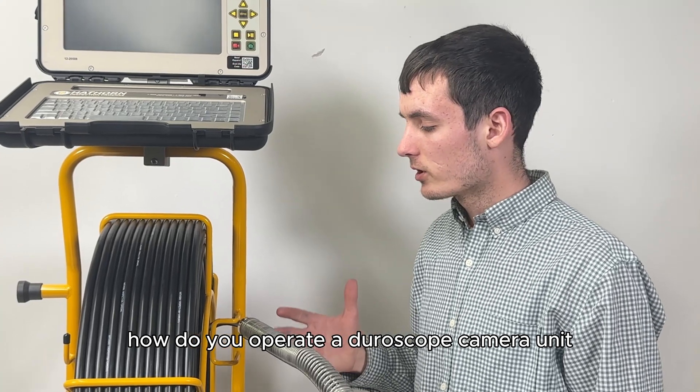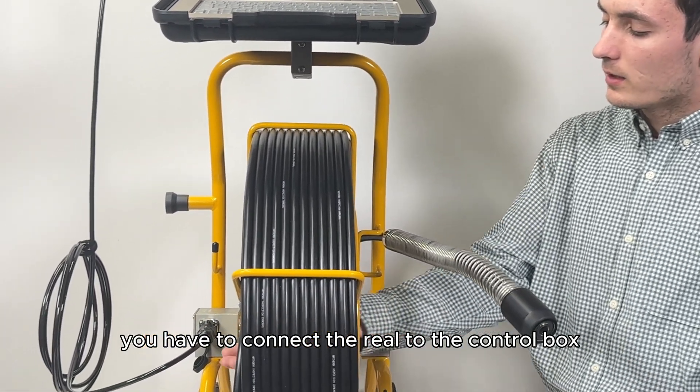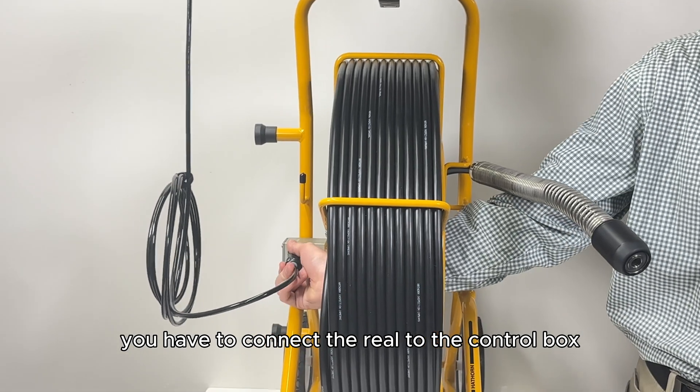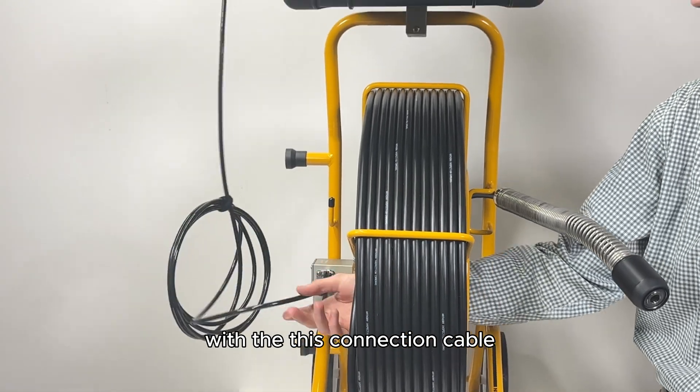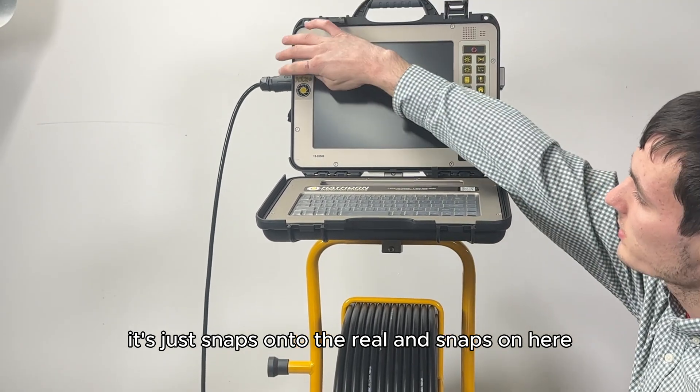How do you operate a Durascope camera unit? First of all, you have to connect the reel to the control box with this connection cable. It just snaps onto the reel and snaps on here.